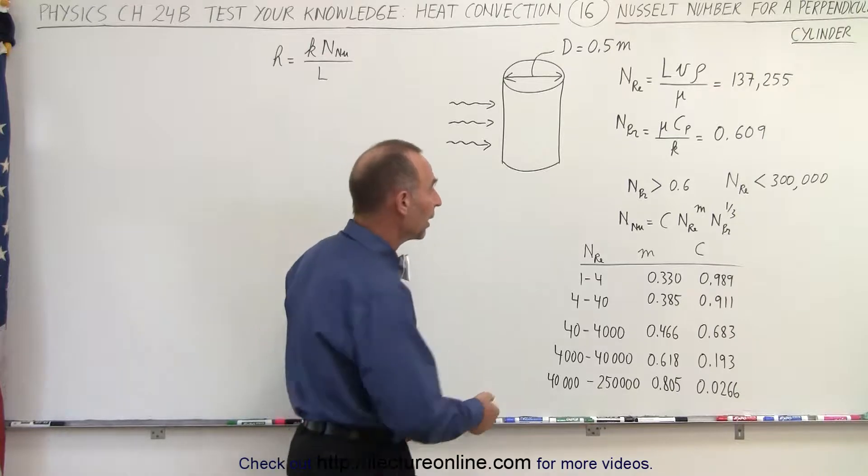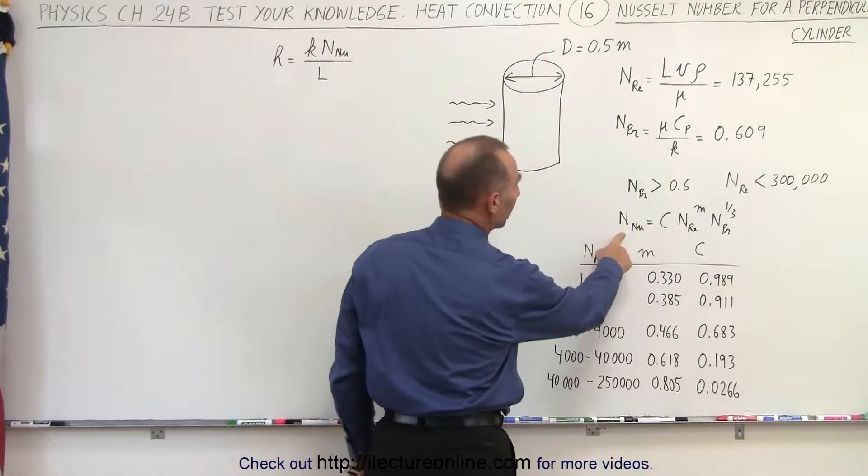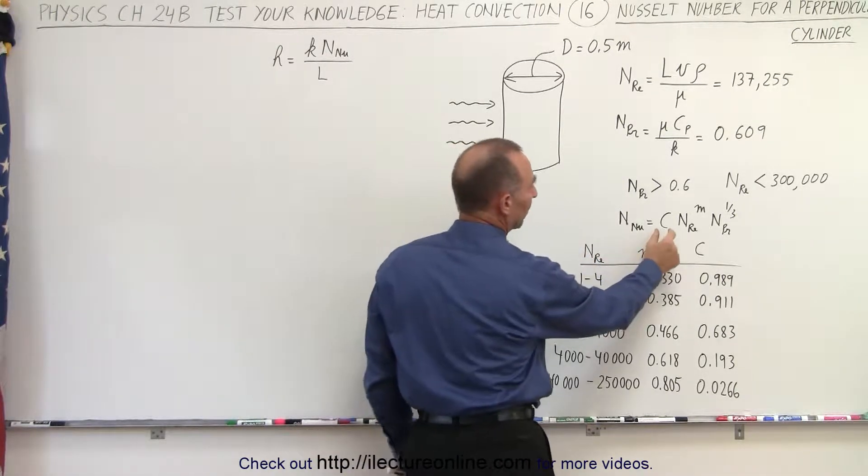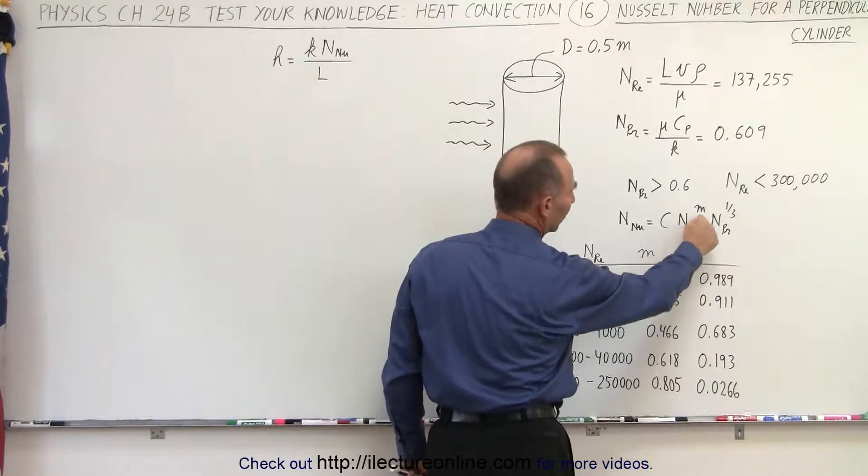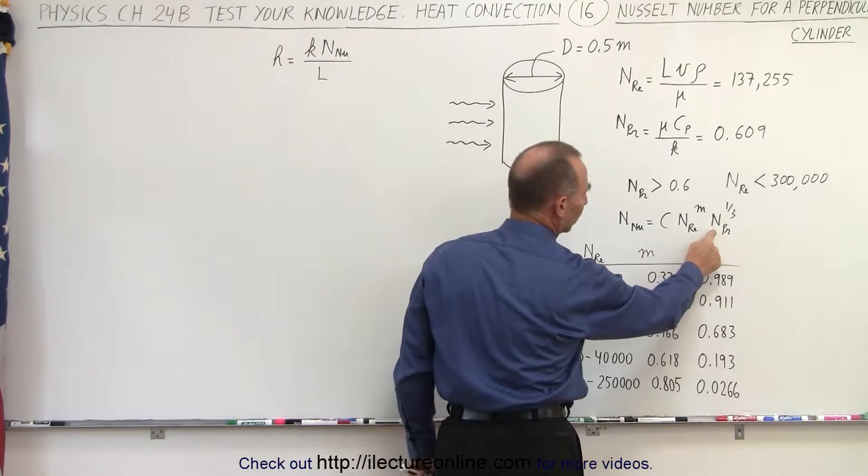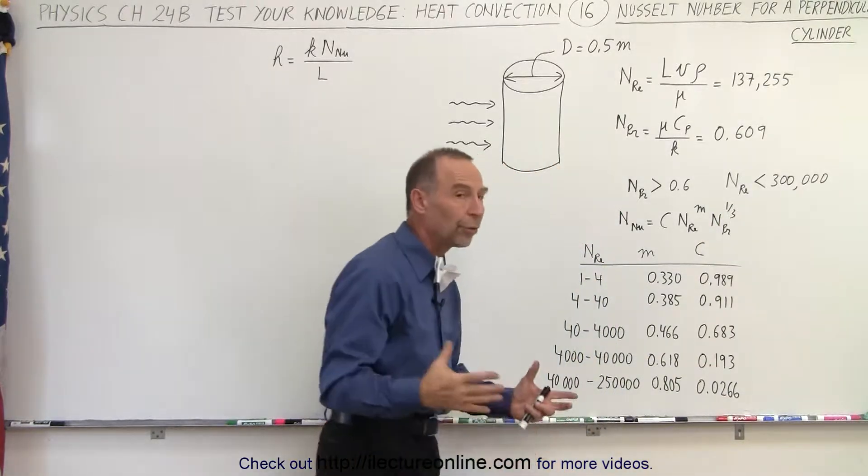And of course that will depend upon the Nusselt number. The Nusselt number can be calculated by multiplying that constant times the Reynolds number raised to some exponent times the Prandtl number raised to typically the one-third exponent.